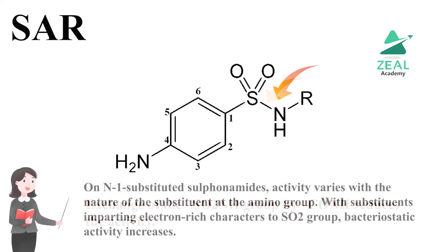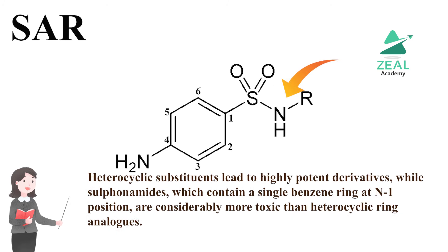For N1-substituted sulfonamides, activity varies with the nature of the substituent at the amino group. Substituents imparting electron-rich character to the SO₂ group increase bacteriostatic activity. Heterocyclic substituents lead to highly potent derivatives, while sulfonamides containing a single benzene ring at the N1 position are considerably more toxic than heterocyclic ring analogues.